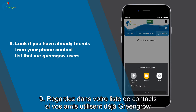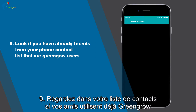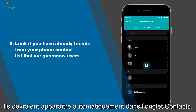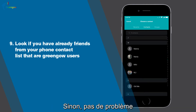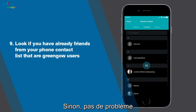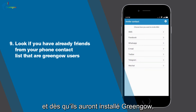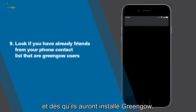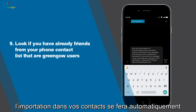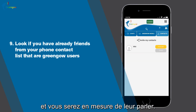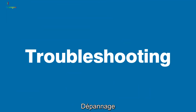9. Look if you already have friends from your phone contact list that are GreenGo users. They should show up automatically in the Contacts tab. If not, no problem — invite them to be a GreenGo user, and as soon as they install it, GreenGo will automatically import them from your contact list and you will be able to talk to them through GreenGo.